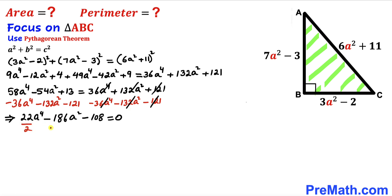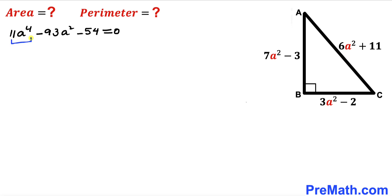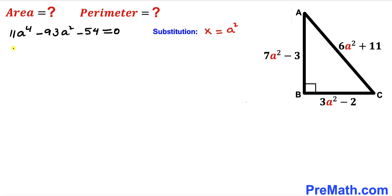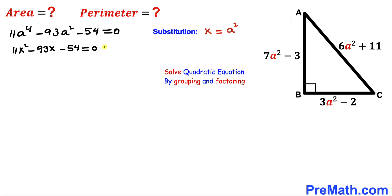We divide every term by 2 to simplify, giving 11a⁴ − 93a² − 54 = 0. We have a quartic equation, so we make the substitution x = a². Then a⁴ becomes x², and we arrive at the quadratic equation 11x² − 93x − 54 = 0.